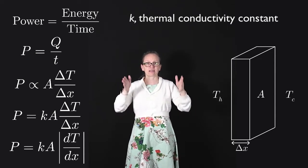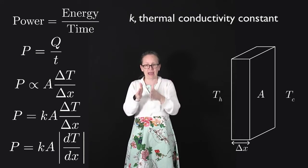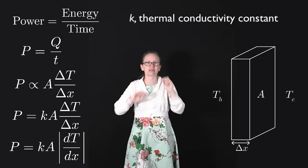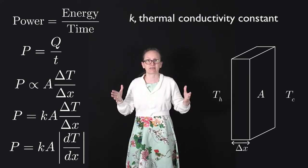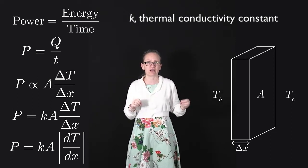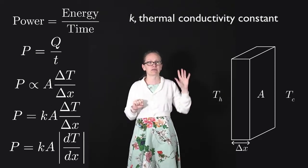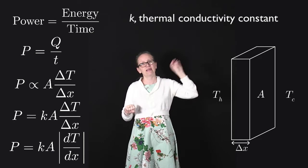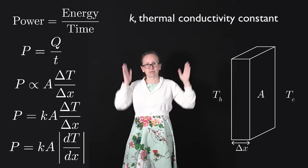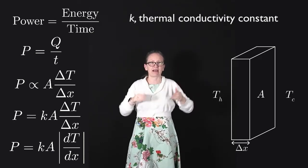Now, if we're considering the amount of heat flowing through a narrow region, then we can break this down into a differential equation. And we can write P is equal to K A dT/dx, and we can put absolute value signs around there.